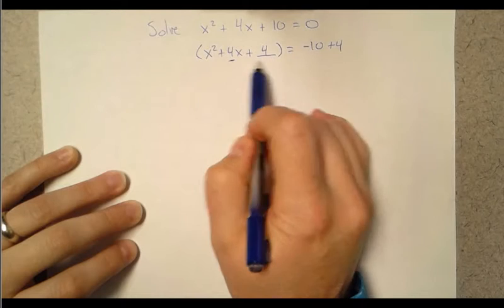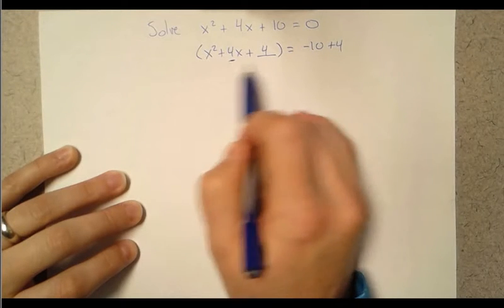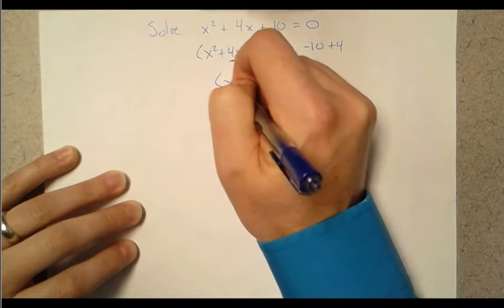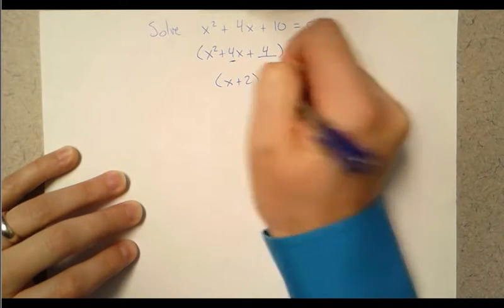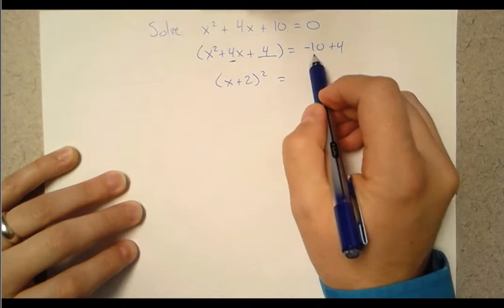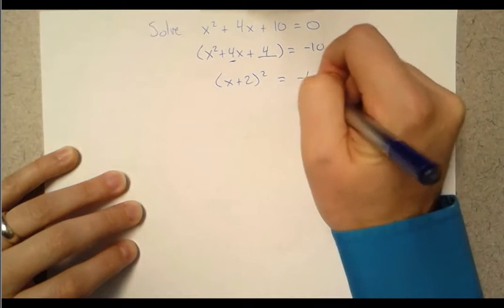Now that 4 made this a nice perfect square. It's going to factor really nicely for us. So it's going to become x plus 2 squared equals now negative 10 plus 4. Negative 10 plus 4 so that's going to be negative 6.